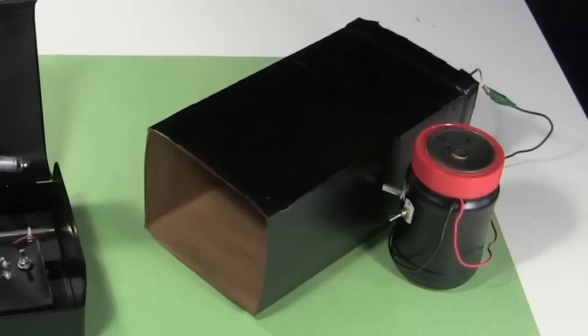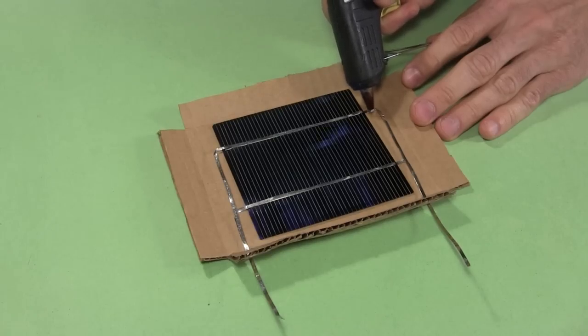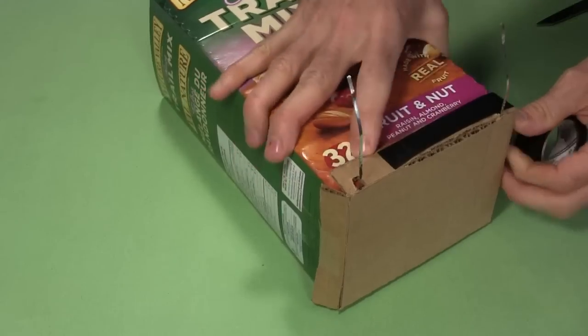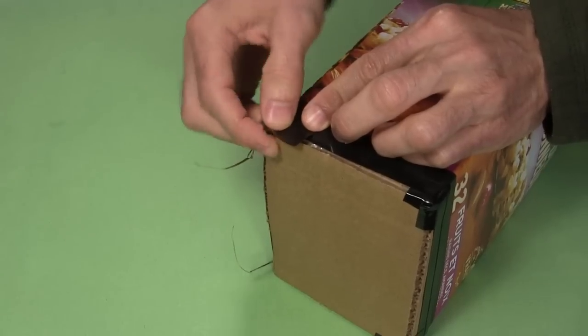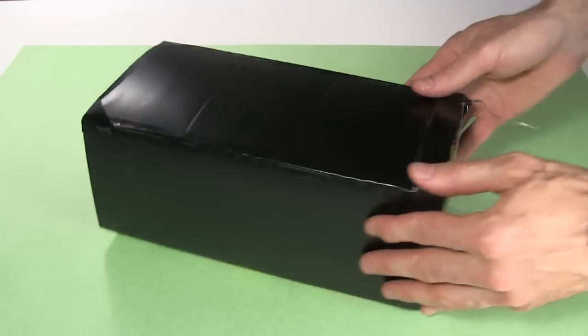The receiving side is much simpler. I hot glue a solar cell to a stiff piece of cardboard. Then I tape that to one end of a longish box, covering any holes that might let extra light in. I paint that black too.